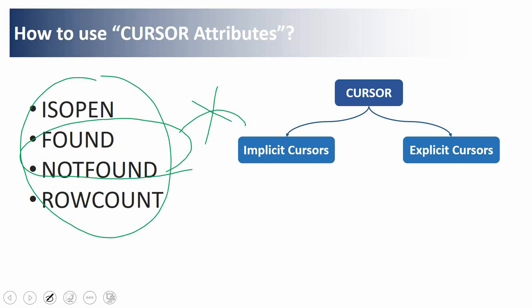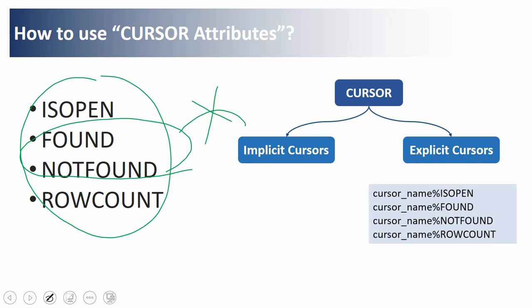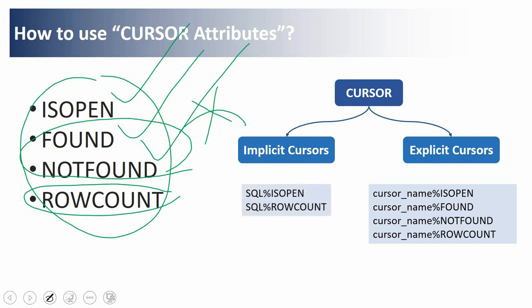To access cursor attribute information from an explicit cursor, the syntax is: cursor_name%attribute_name. IS OPEN, FOUND, and NOT FOUND return a boolean value, while ROWCOUNT returns a numeric value. For implicit cursors, the name is SQL, so the syntax is SQL%attribute_name.